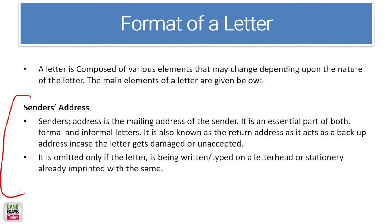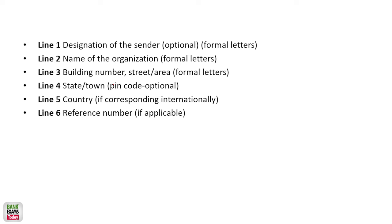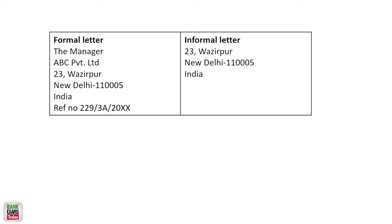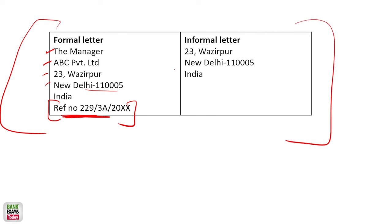Let's discuss the format of the letter. First of all, it starts with the sender's address — whoever is writing the letter writes their own address. The sender's address is the mailing address of the sender and it is an essential part of both formal and informal letters. Whenever you write a letter, you write your address as well in case it does not reach the destination and comes back to you. You write your name, building and apartment, city, and always write your pin code.